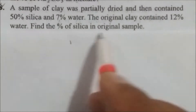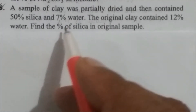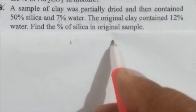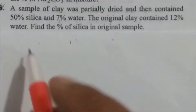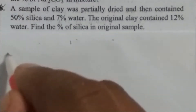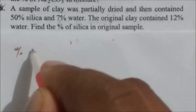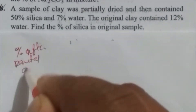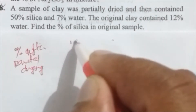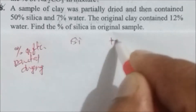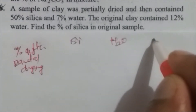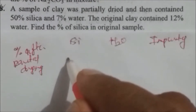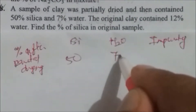A sample of clay was partially dried and then contains 50% silica and 7% water. The original clay contains 12% water — find the percentage of silica in the original sample. After partial drying, we have three components: silica, water, and impurity. Silica is given as 50%, water is 7%, and impurity makes up the remainder.